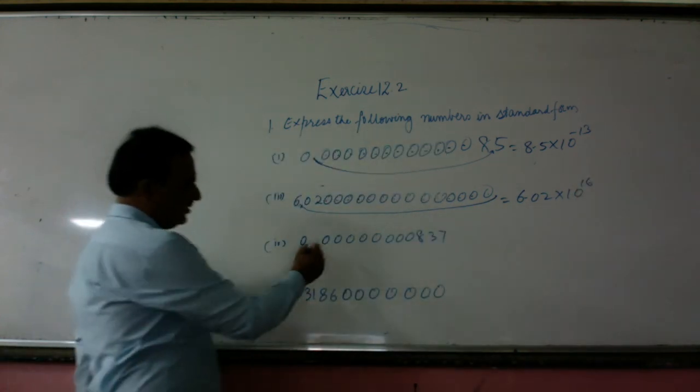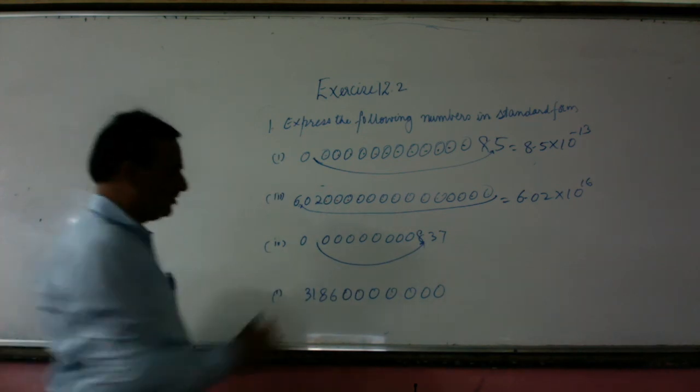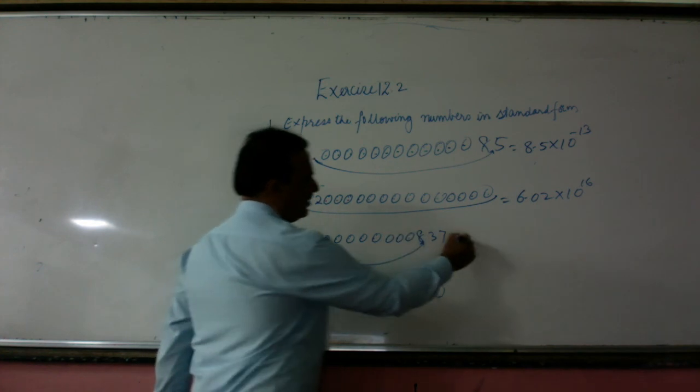Now here this point is shifted here. So it is 0.00 something, so it is a very small number. 1, 2, 3, 4, 5, 6, 7, 8, 9, 10.